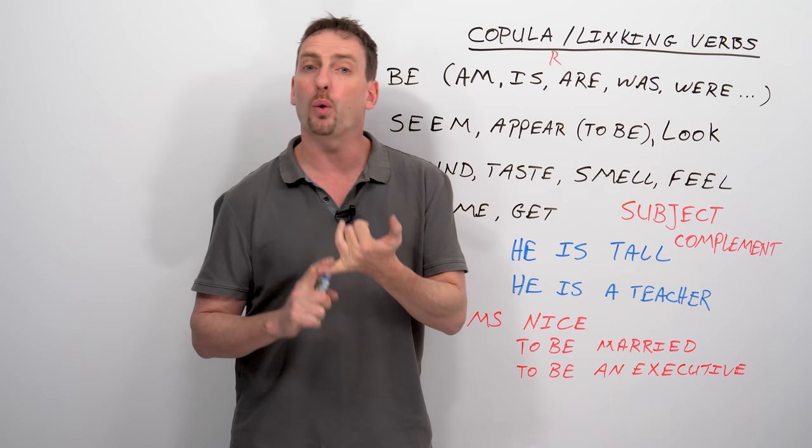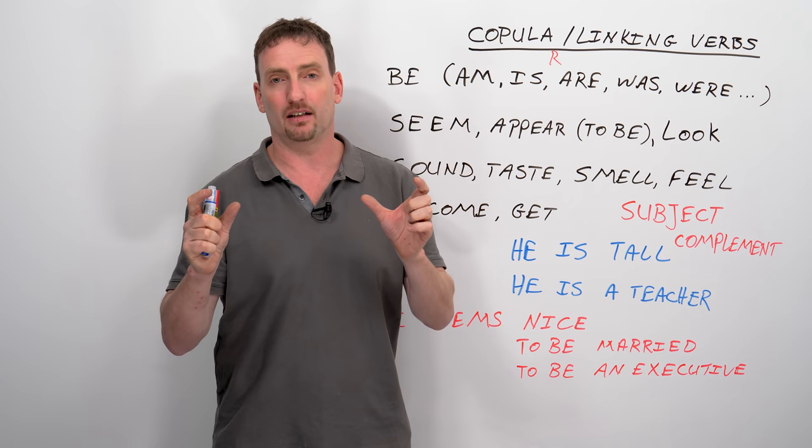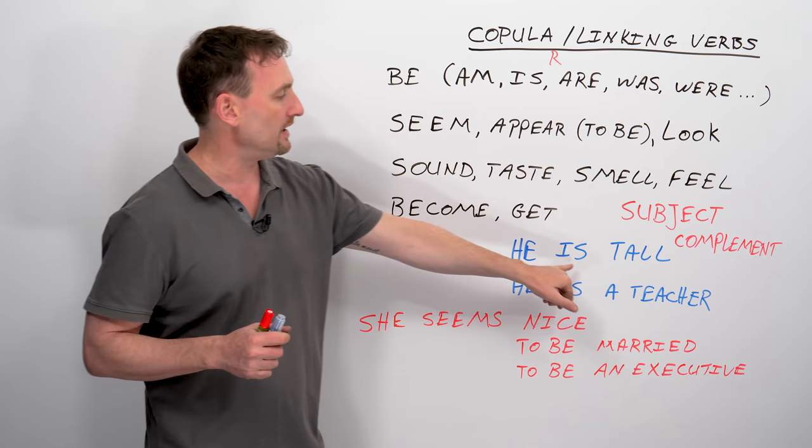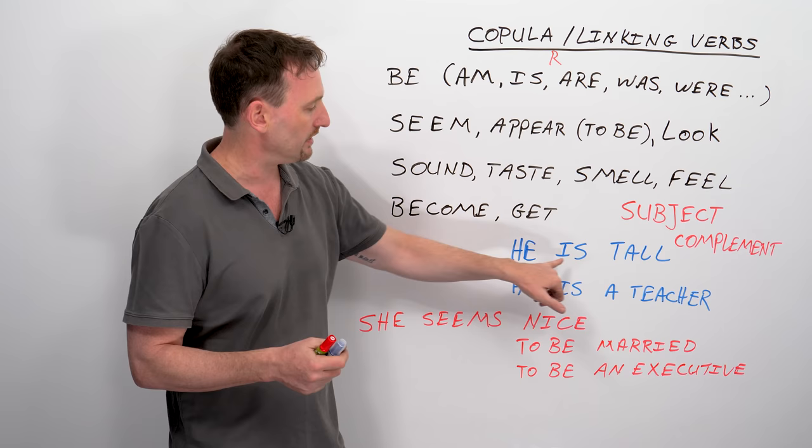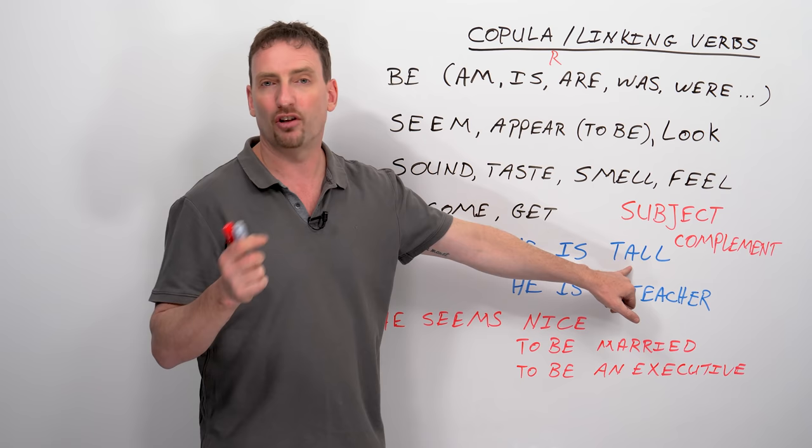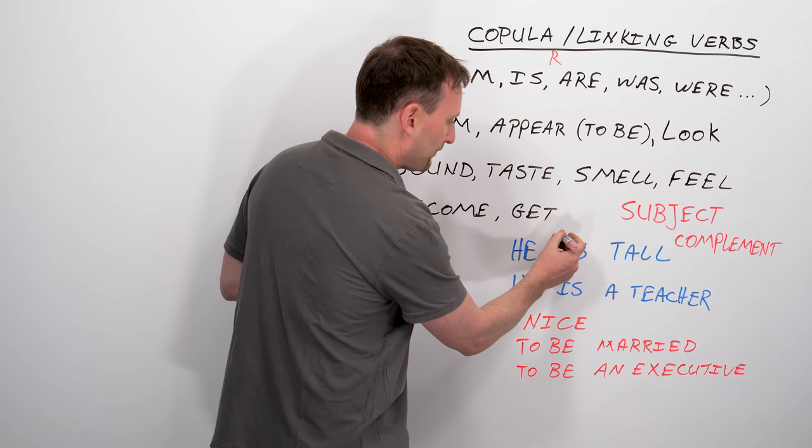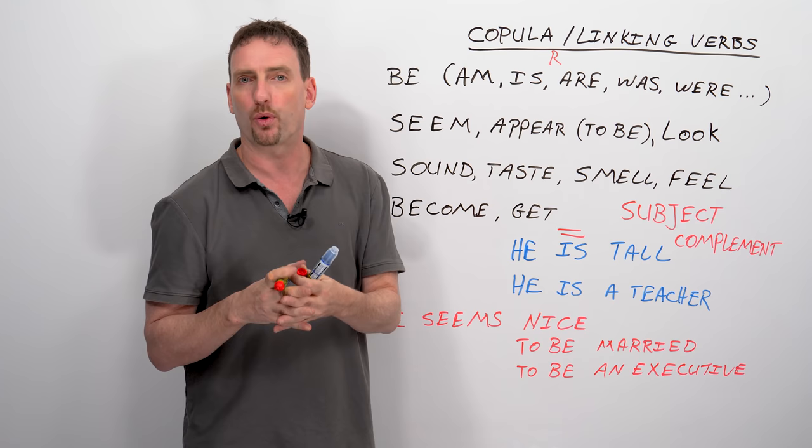And then become and get. And I split these up for a reason, and I'll show you that reason in a moment. So first thing to remember, there is no action involved with copula verbs. What they are doing is they are linking, they are joining, or showing some sort of relationship between the subject of a sentence and the subject complement.